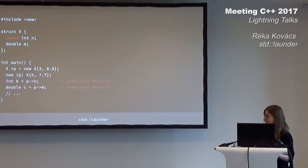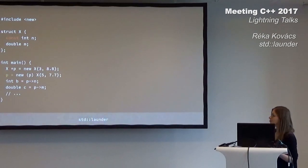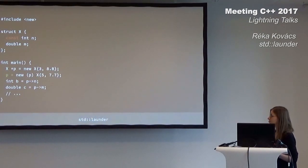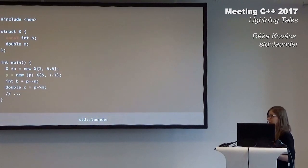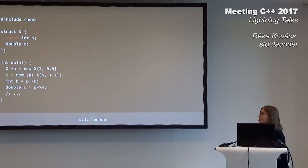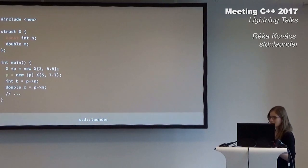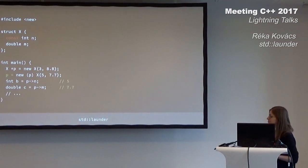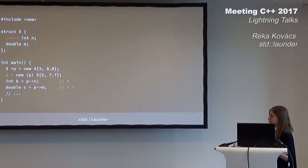So how can we fix this problem? One solution could be to reassign the return value of placement new to our pointer. And this actually works — our B and C values are valid again.